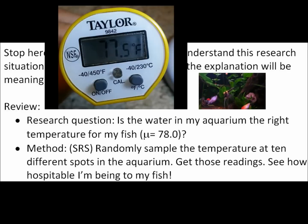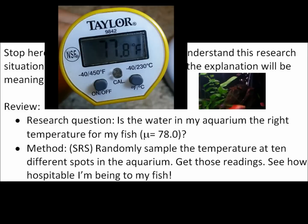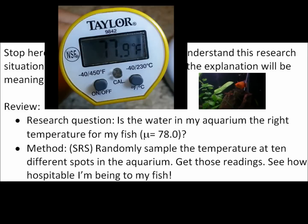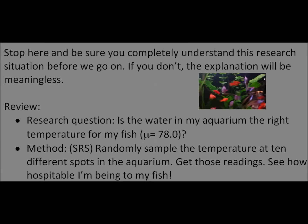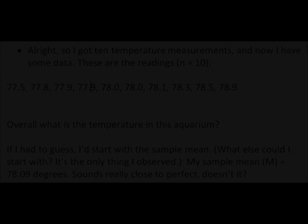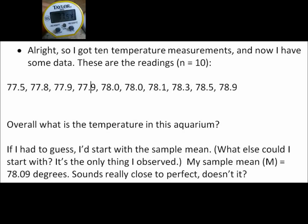The method is simple random sampling — randomly sample the temperature at ten different spots in the aquarium and get those readings. I got ten temperature measurements and now I have some data. We'll look at the SPSS output in a second.